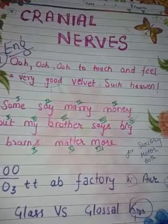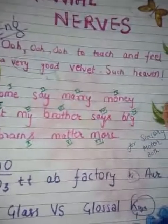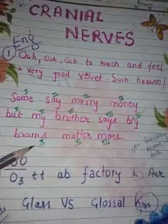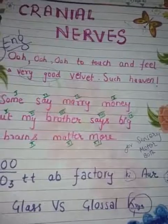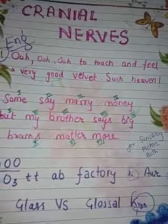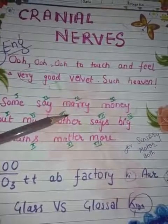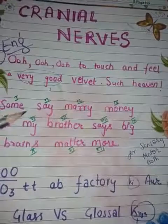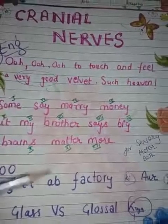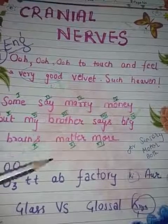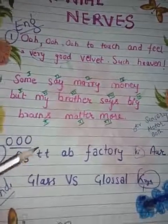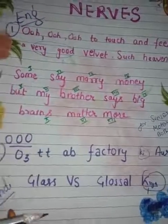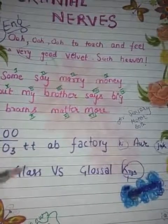The second mnemonic is for both viewers: 'Some say marry money but my brother says big brains matter more.' Here S stands for sensory nerve, M for motor nerve, and B for both — meaning a nerve is sensory, motor, or both. You can learn this from the mnemonic — it is very simple.